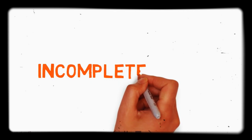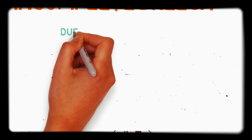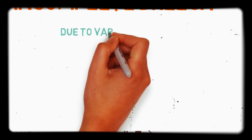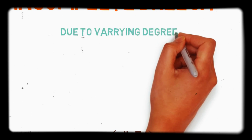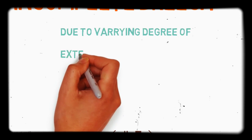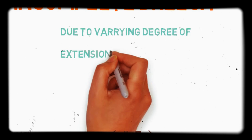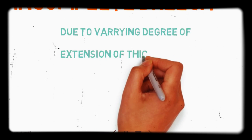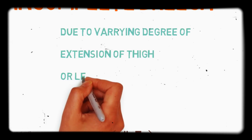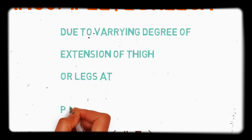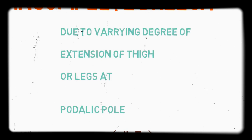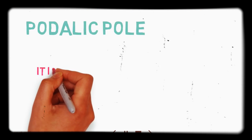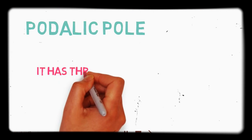Next is the incomplete breech presentation. Usually, this is occurring due to changes in the degree of extension of the breech — the thigh or leg at the fetal part. That is the reason for incomplete breech presentation. Mainly, this incomplete breech presentation is divided into three: Frank breech, Footling breech, and Kneeling breech.